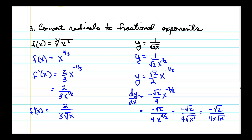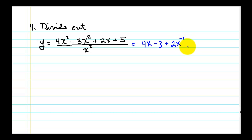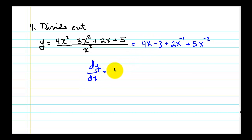The fourth and final skill is dividing out. If you have a polynomial divided by a single term, you rewrite by dividing into each term. So 4x cubed divided by x squared is 4x; negative 3x squared divided by x squared is negative 3; 2x divided by x squared is 2x to the negative 1; and 5 divided by x squared is 5x to the negative 2. Now we have a polynomial form and can apply the sum/difference and power rules. The derivative dy/dx: the derivative of 4x is 4; derivative of the constant is 0; negative 1 times 2 gives minus 2x to the negative 2; and negative 2 times 5 gives minus 10x to the negative 3.